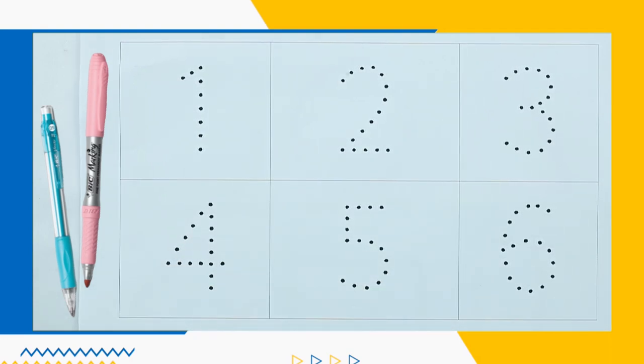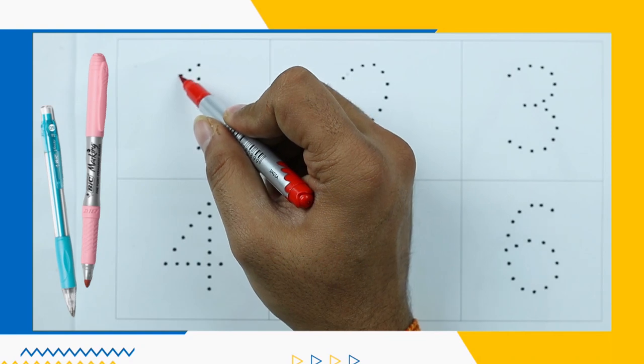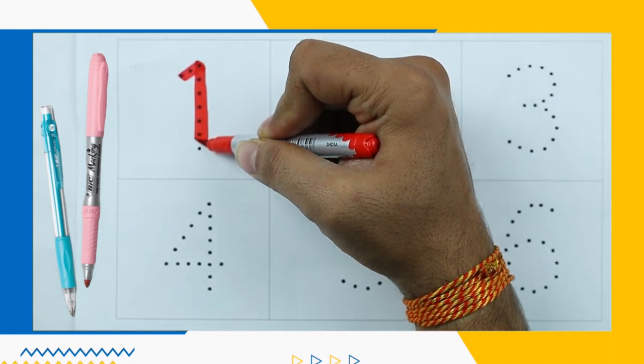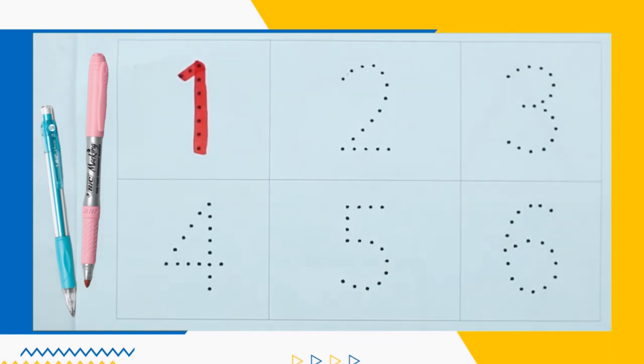Let's start. Write numbers 1 to 10. It's number 1. Yes! Number 1 with red color.